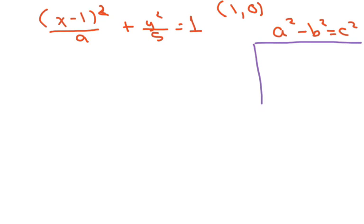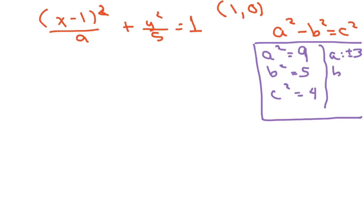So a squared is always your bigger number, which is 9. b squared is 5. And c squared therefore would be 4. Because 9 minus 5 is 4. Therefore a equals plus or minus 3. b equals plus or minus root 5. Should have left more room. b equals plus or minus root 5, square root of 5. And c equals plus or minus 2.